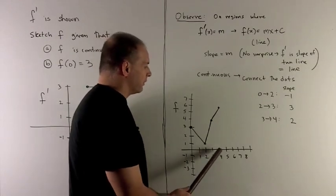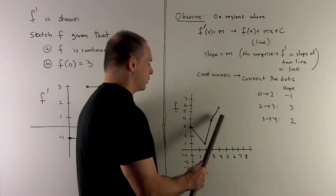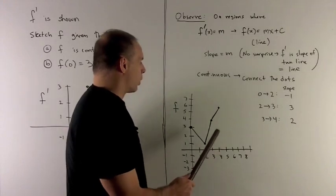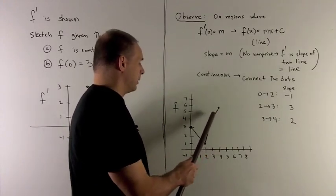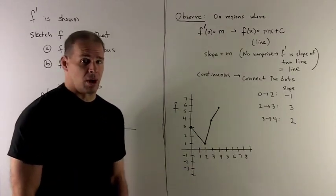As I go from 3 to 4, the slope is 2. So that means if I go over 1, then I have to go up by 2, bringing me to the point 4 comma 6. We draw the line in, keeping everything connected. And then that leaves me with my graph of f.